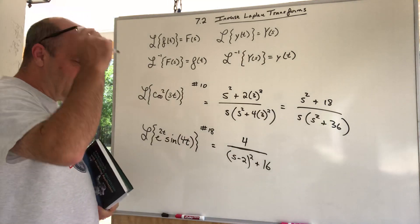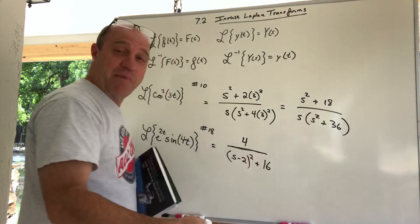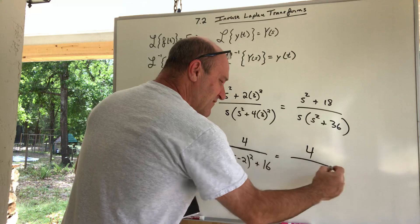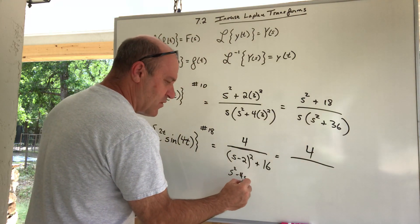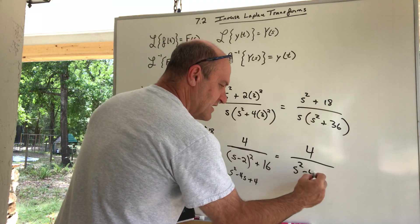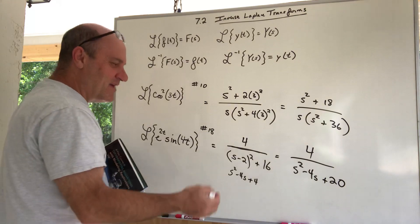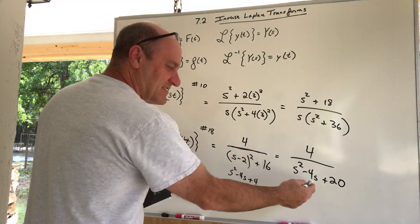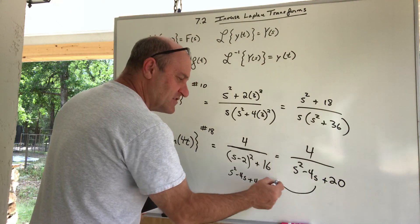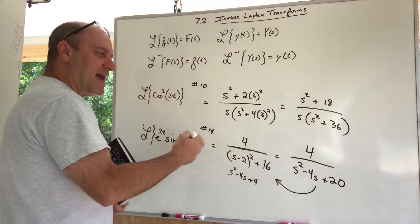This result can also be disguised. If you foil out (s − 2)², you get s² − 4s + 4, and adding 16 gives s² − 4s + 20. That doesn't look like rule number 18 at all — so to go backwards you might need to complete the square to make it match the table form.